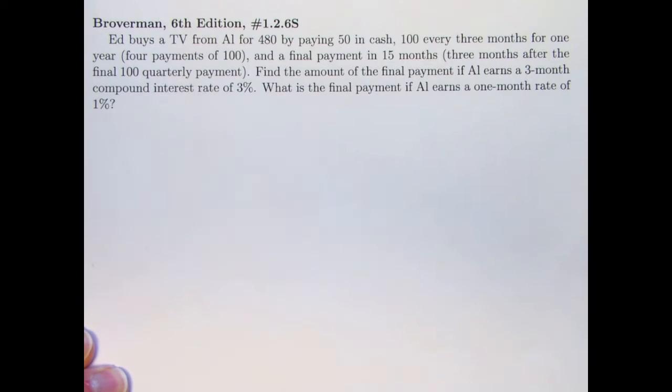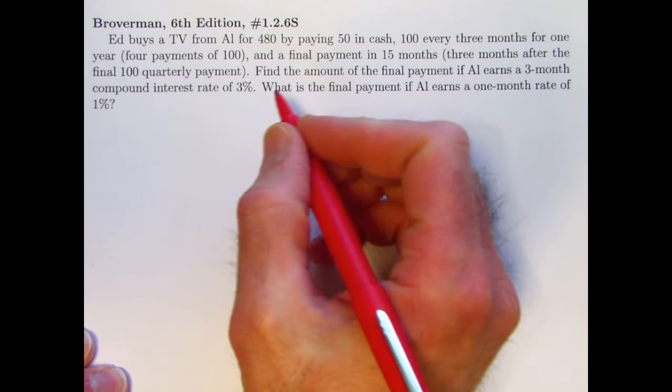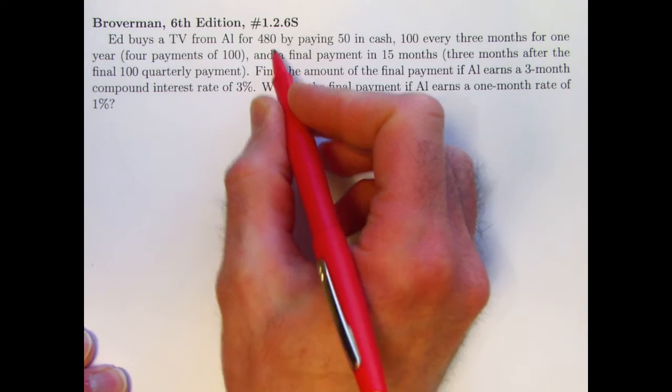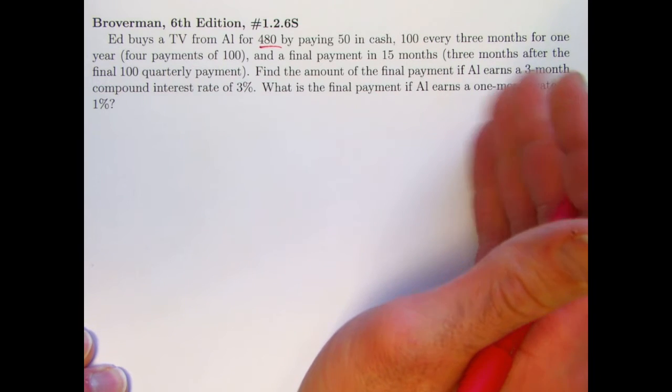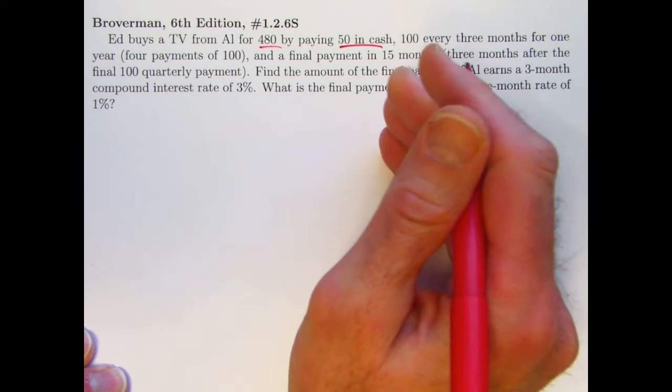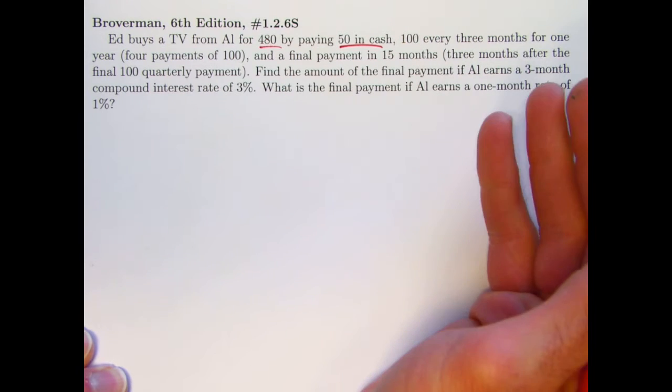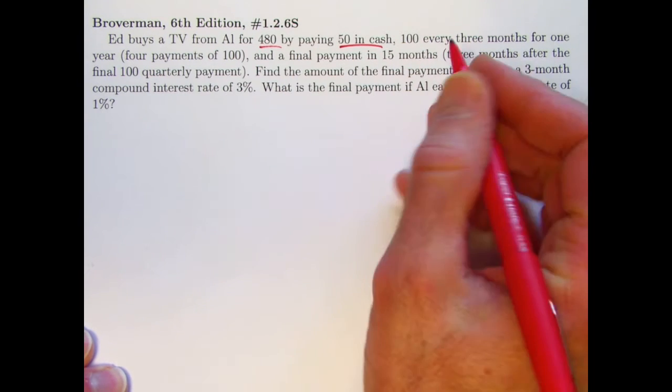Here's the problem statement. Ed buys a TV from Al for $480, but he's not going to pay that $480 right away. He's going to pay $50 right now and then essentially pay back what is a loan over a certain amount of time.